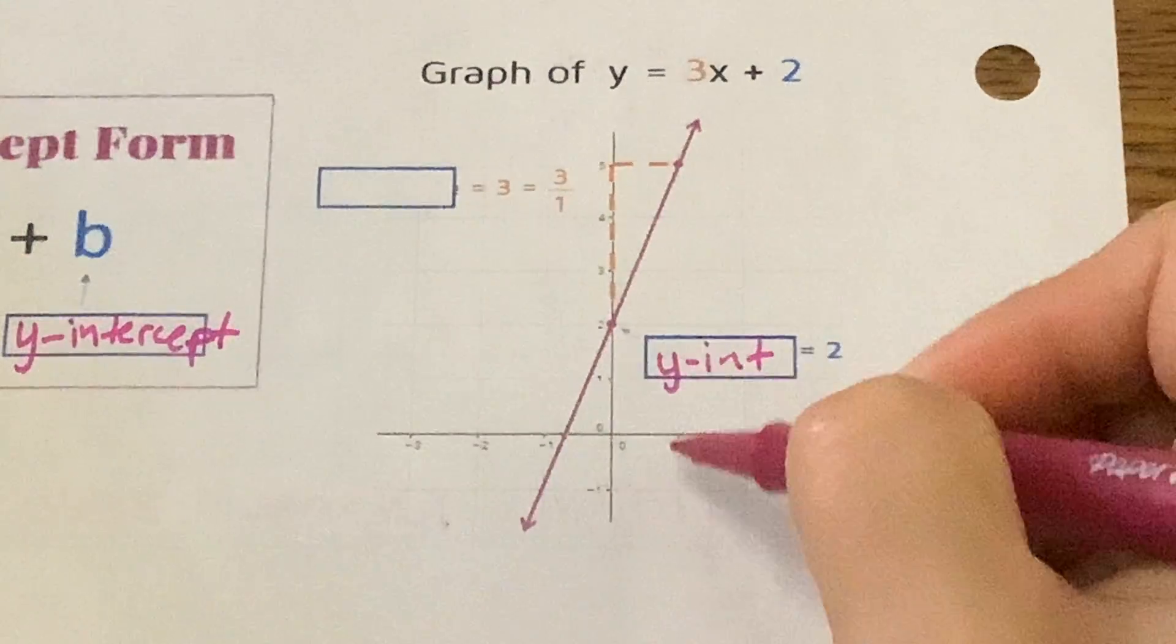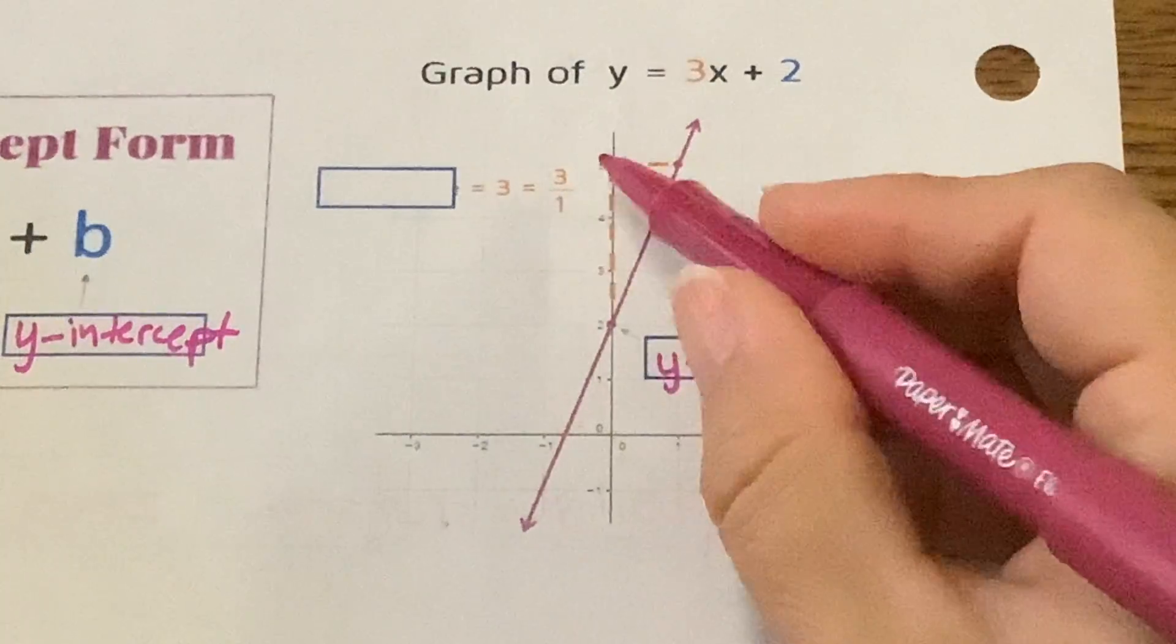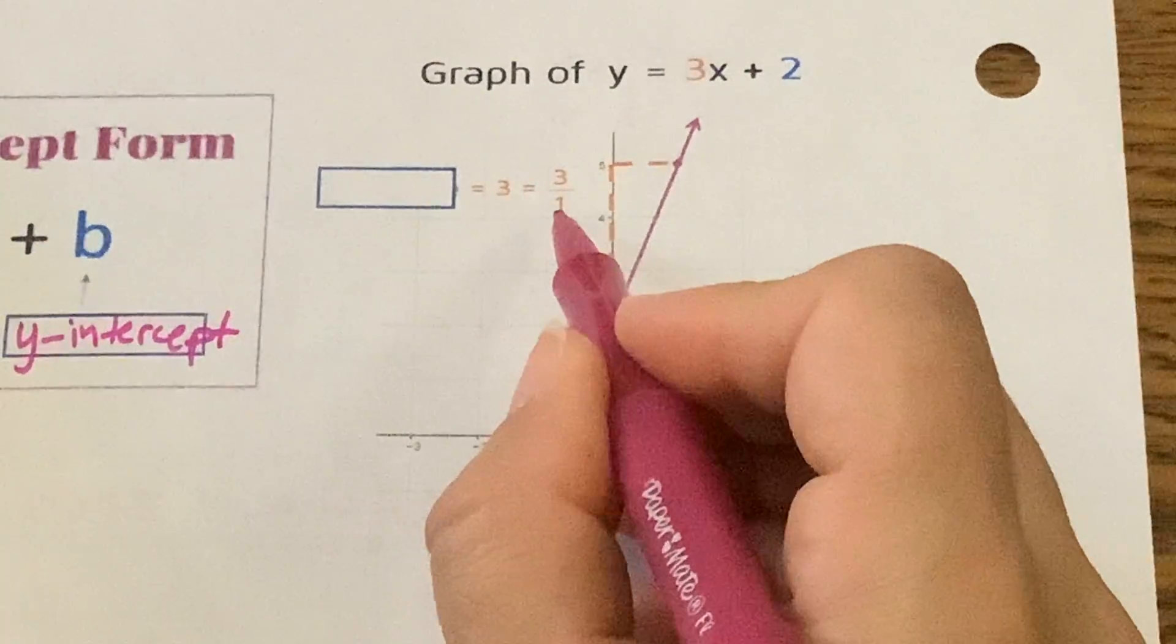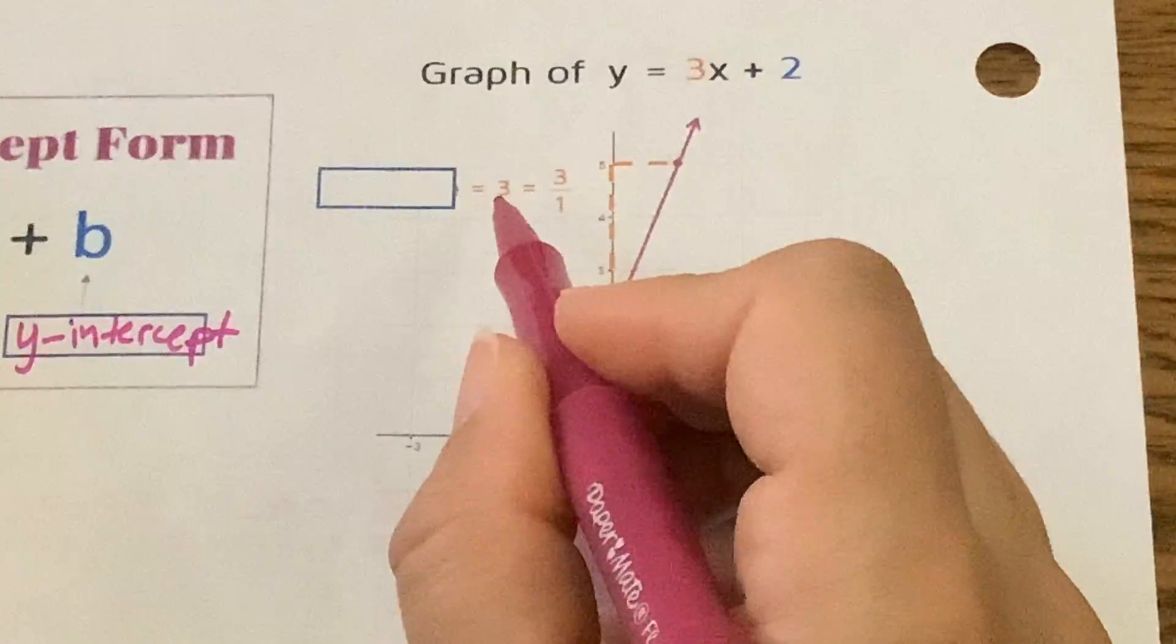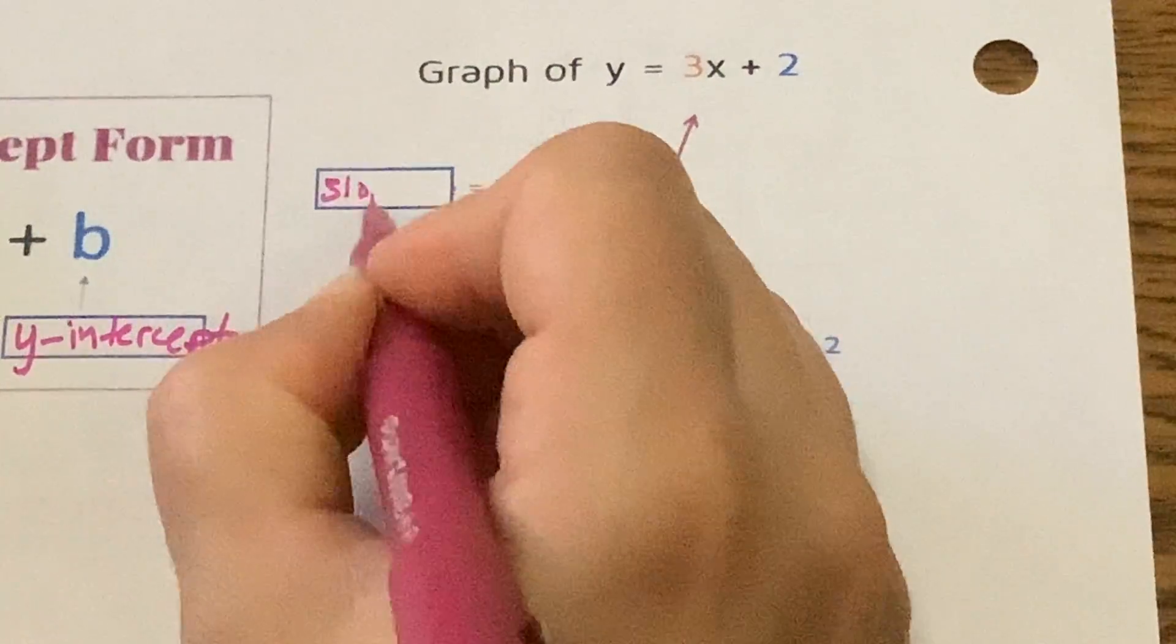It's only over one. Look at the hash marks. It's only over one. So three over one, and that's where they got this fraction from. And three divided by one is? Three. And so that is representing the slope.